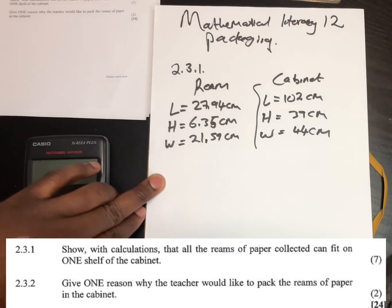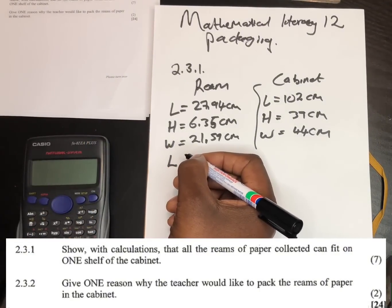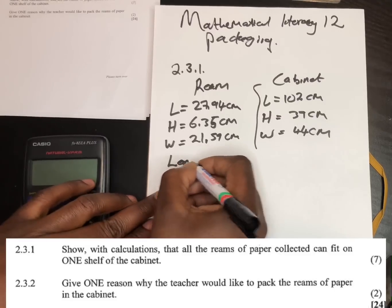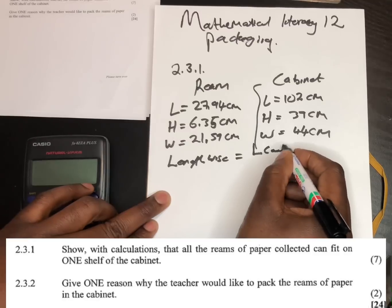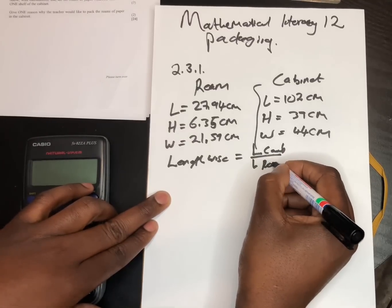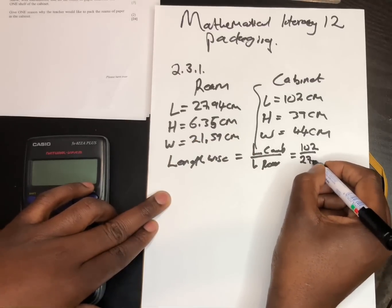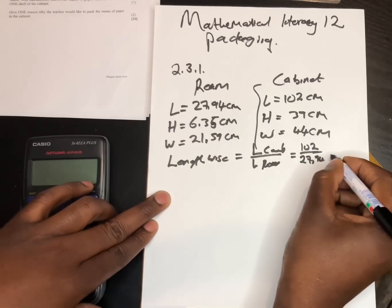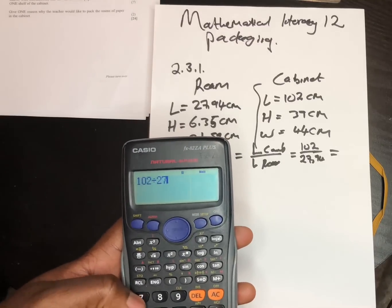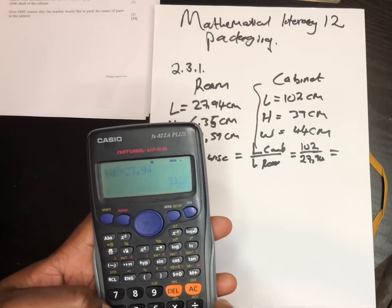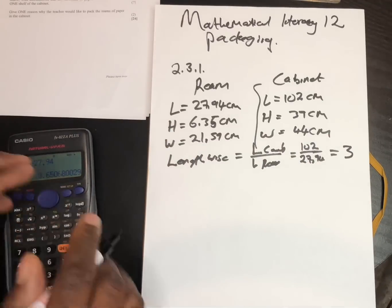When calculating, length goes with length, height with height, and width with width. For length: divide the cabinet length by the ream length — 102 divided by 27.94. We must always round down. The answer is 3, so we arrange 3 reams along the length.